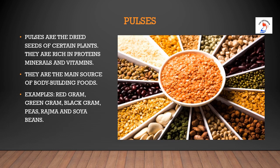Next come the pulses. What are pulses? Pulses are the dried seeds of certain plants. They are rich in proteins, minerals and vitamins. Proteins are the main source of body-building foods. Small children need more protein because they keep growing, so you have to include more protein in your diet. Examples are red gram, green gram, black gram, peas, rajma and soya beans.